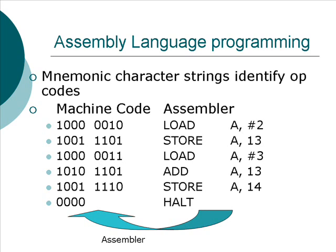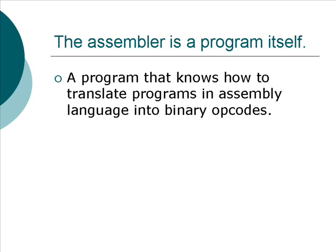This is what an assembler language program might look like — corresponding to that machine language program. But the computer doesn't understand the assembler language program; it has to be converted. There has to be another program that already exists on that computer, and that program is called an assembler. You execute the assembler and it takes the assembler code as input and produces the machine code as output. An assembler is a program that knows how to translate programs written in assembly language into a program in machine code, which is a sequence of binary opcodes.